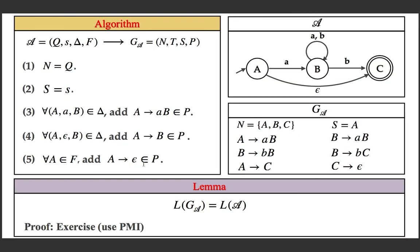We have a correctness lemma which tells that the language generated by the right linear grammar is precisely the language of the NFA. You can use the principle of mathematical induction to prove the soundness and completeness. With this we have an algorithm to generate a right linear grammar from an NFA with epsilon transitions.